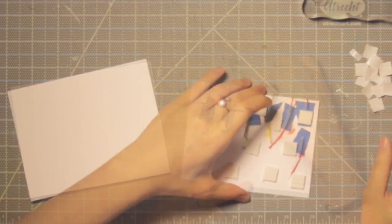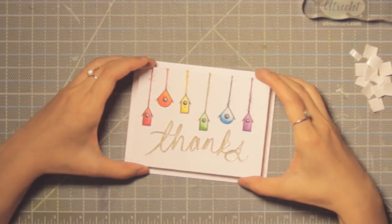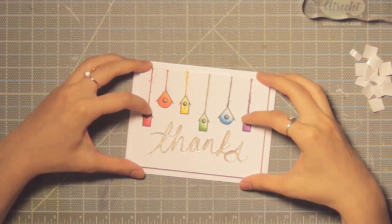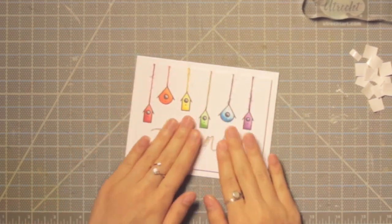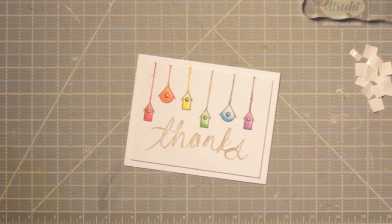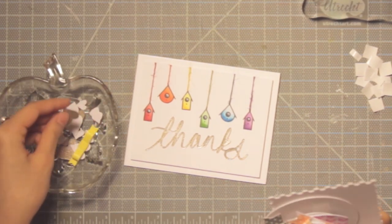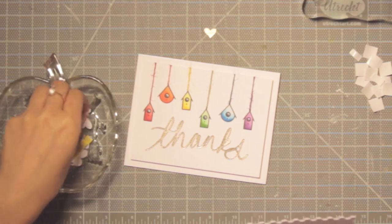So now that all of that is adhered, I'm going to attach this card front to a card base. So I started off with a piece that was slightly smaller than four and a quarter by five and a half, so now it can fit perfectly on a standard size card base with a little area around the edges. And I just popped this up on foam squares.